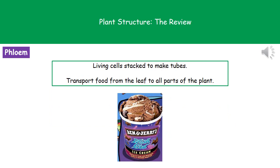The second tissue we need to remember is the phloem. These are living cells that are again stacked up to make tubes, and their job is to transport food — sugar — from the leaf to all parts of the plant. The easiest way to remember this: think about Ben and Jerry's ice cream, packed full of good sugars, and of course think of fish food, which starts with 'ph', just like our phloem. So fish food and phloem are both all to do with sugar.